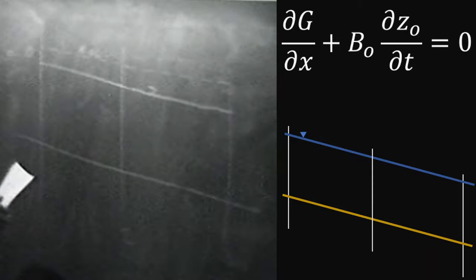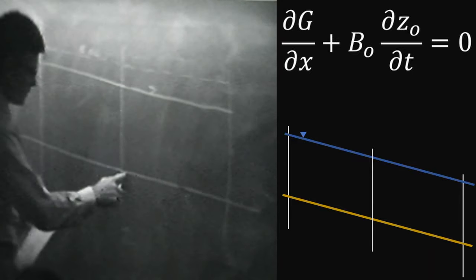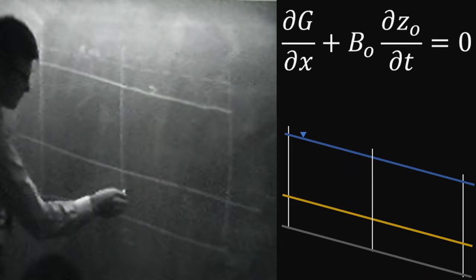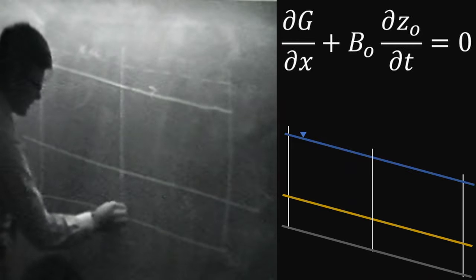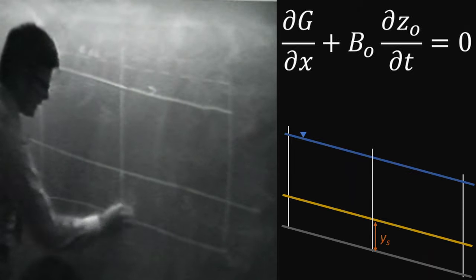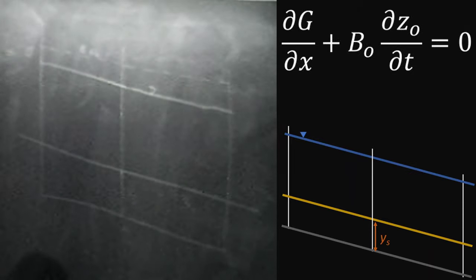So this stream bed, instead of being fixed, now can move up and down. Let's assign some depth of sediment material to the stream bed, and let's call that depth of sediment material Ys. According to this equation, Ys can change with time.